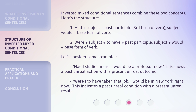Let's consider some examples. 'Had I studied more, I would be a professor now.' This shows a past unreal action with a present unreal outcome. 'Were I to have taken that job, I would be in New York right now.' This indicates a past unreal condition with a present unreal result.